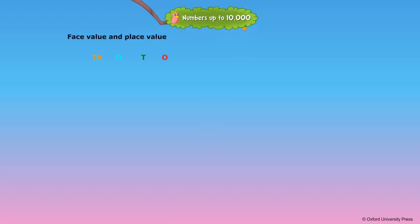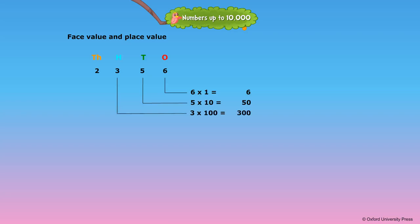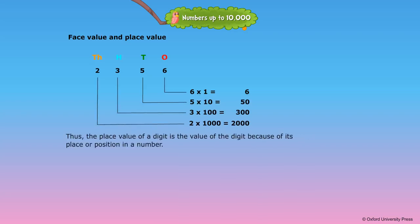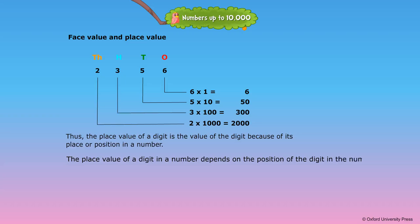Face value and place value. Consider the number 2356. The place value of each digit is shown below. The place value of a digit is the value of the digit because of its place or position in a number. The place value of a digit in a number depends on the position of the digit in the number.